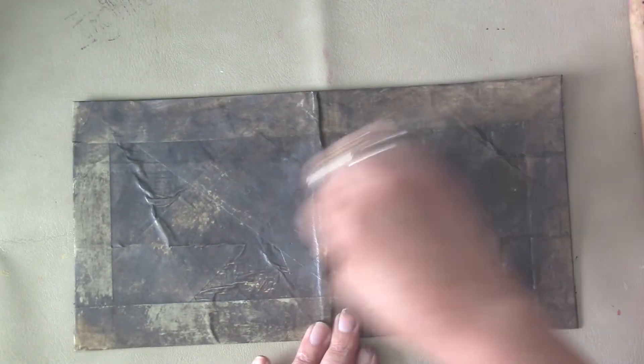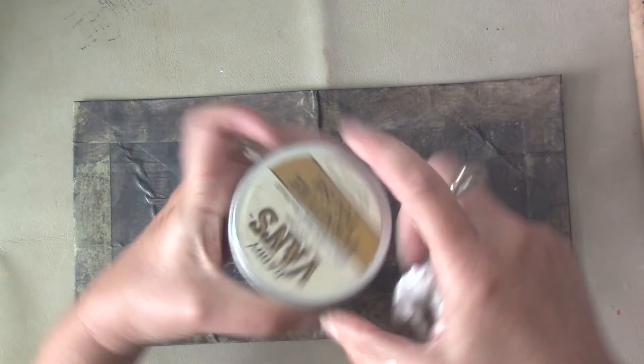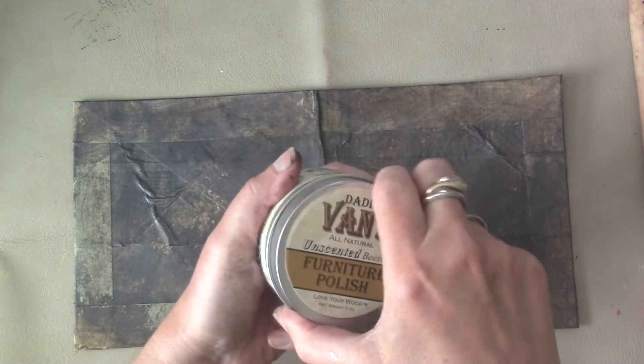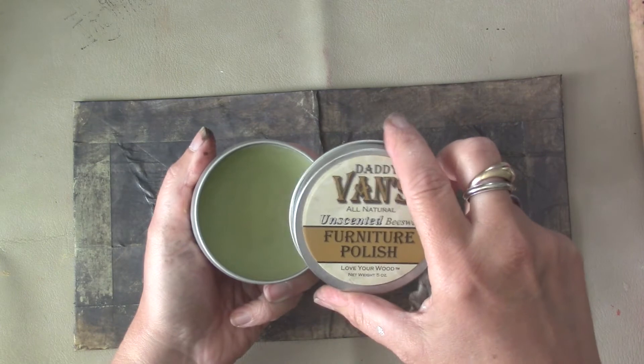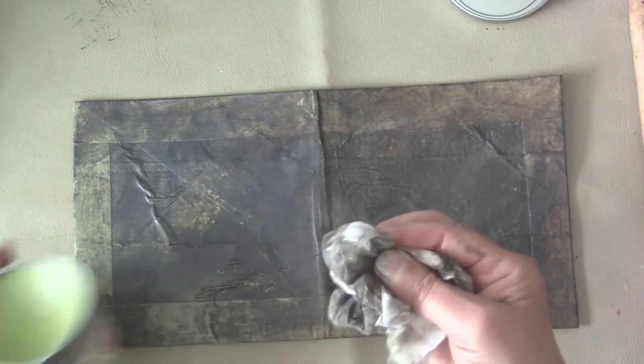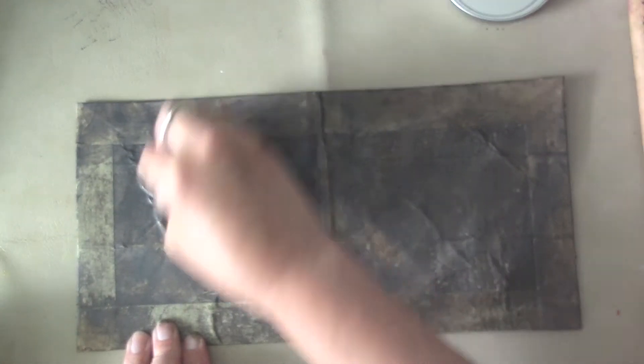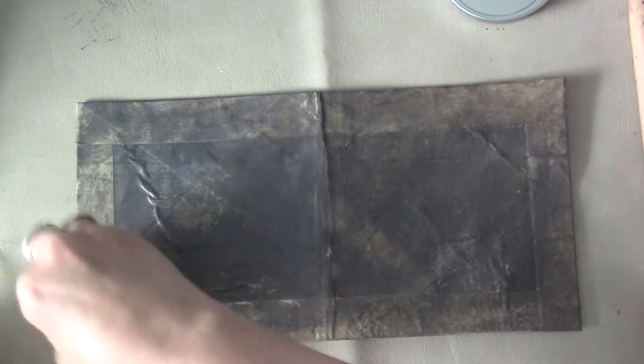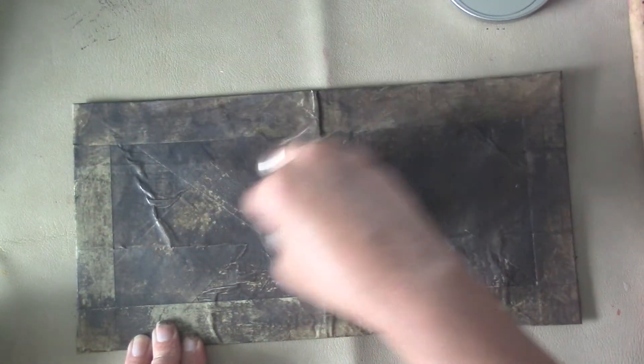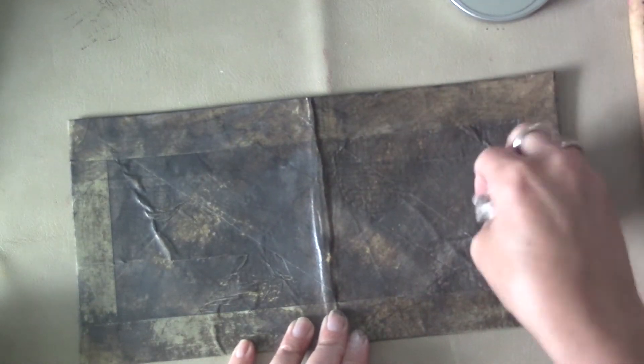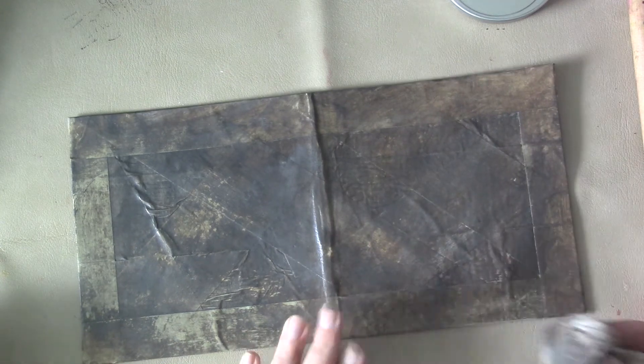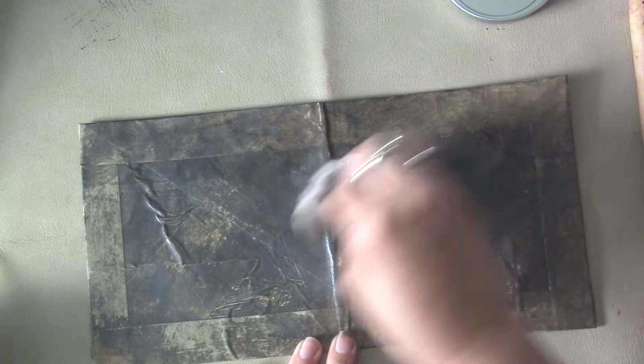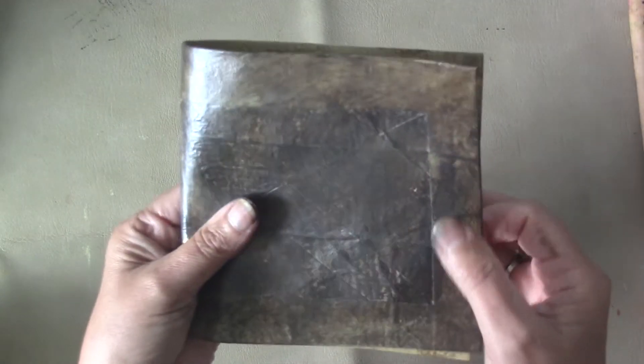The last thing I did was I took some Daddy Van's furniture polish, it's beeswax. Basically, I just wanted to give it a little bit of a shine like leather would have, so I'm just kind of going over it like that and buffing it with a nice dry rag. I think I'm very happy with it. I wish you could feel it. It feels like leather for sure.